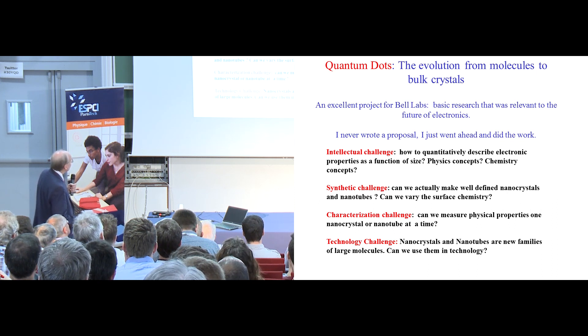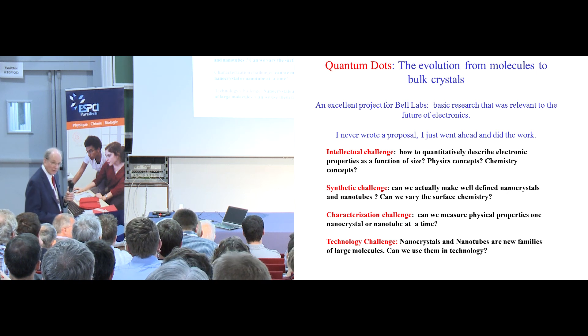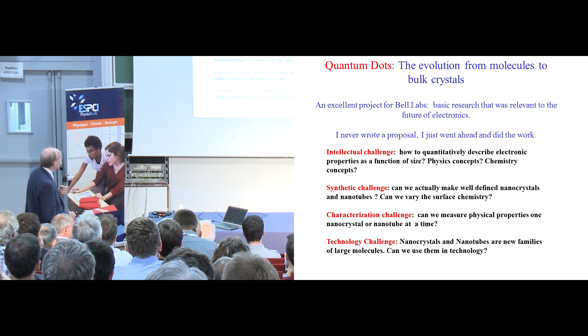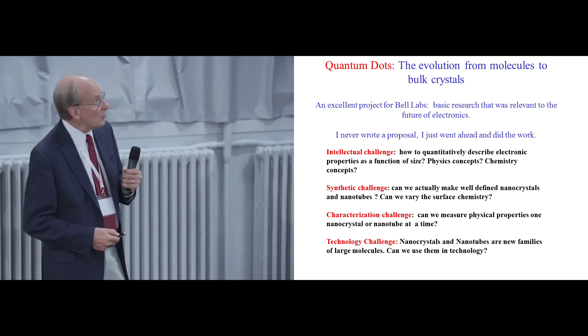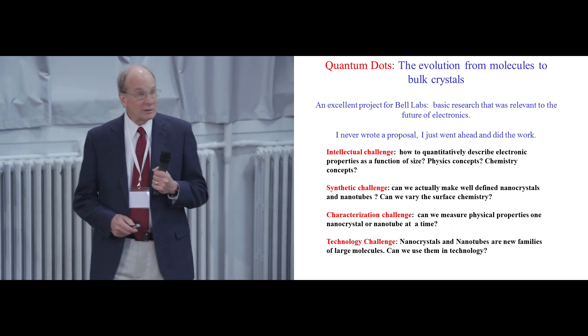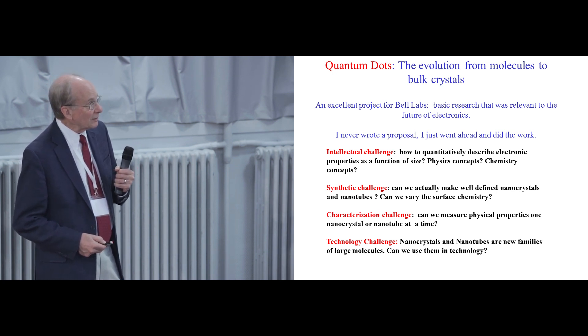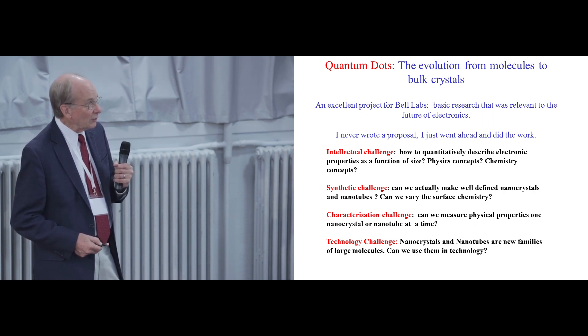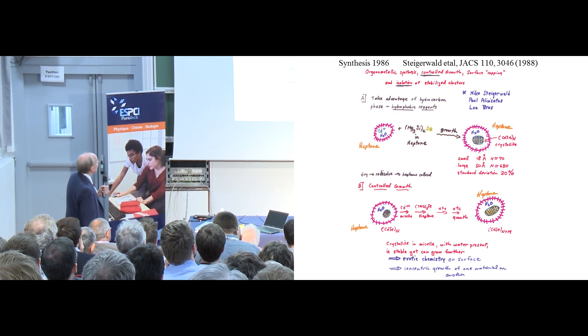So there were all of these things happening simultaneously. This idea of how to deal with the theory of this and also the synthetic challenge. More important, that's much more important than the theoretical challenge. Could you actually make particles of intermediate size? Could you do things with them? Could you vary the surface chemistry? And because the synthesis was and remains, I would almost say lousy, or not perfect, there was this tremendous driving force to measure the physical properties one nanocrystal at a time, and then this technology challenge to use them once we get halfway decent synthesis going.